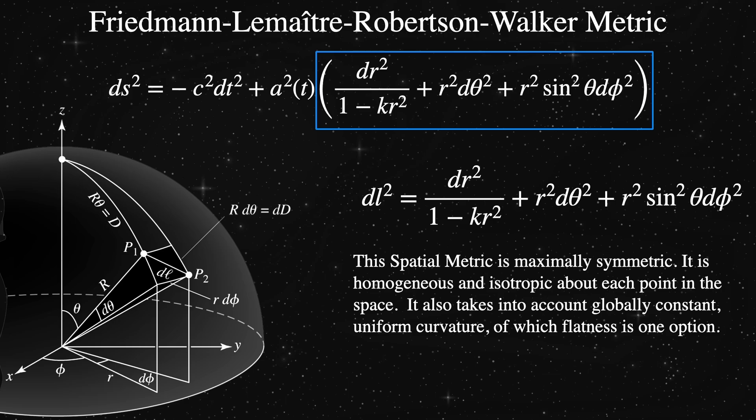We can just go back and forth between the coordinate choices, using the one that makes our current job easier. Again, we maintain spatial homogeneity and isotropy around every point in the spatial portion, and we allow the spatial part to now have a globally uniform curvature.